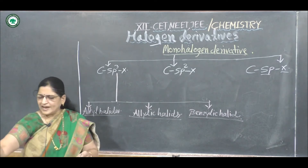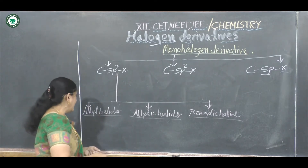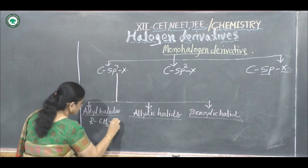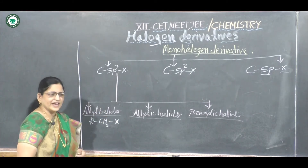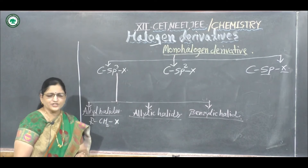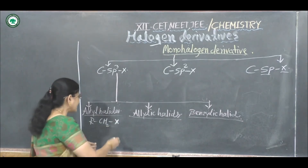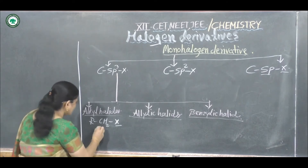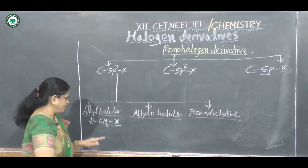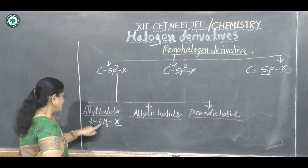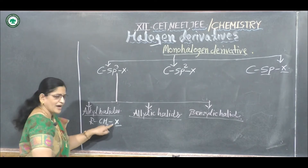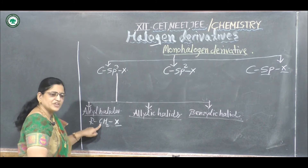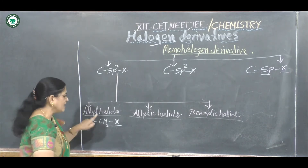Alkyl halides are represented as RCH2X. The halogen atom is attached to an sp3 type of hybridized carbon atom. This carbon atom is bonded by a carbon-carbon single bond, hence it is called an sp3 type of hybridized carbon atom.